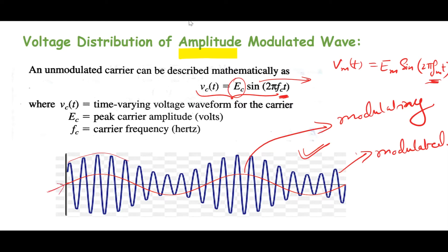Here you can see this red one is your message signal or modulating signal. Your AM wave will follow the same envelope. For a positive going modulating signal, the amplitude of the modulated wave is increased — you can get the value EC plus EM. And for a negative going modulating signal, the amplitude of the modulated wave is also decreasing, so at that point it follows this equation.